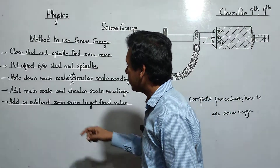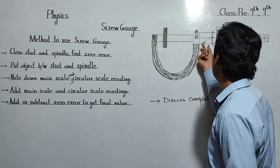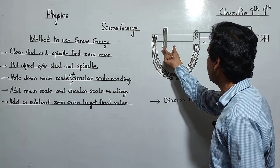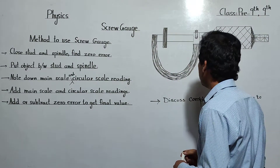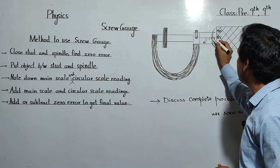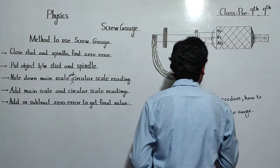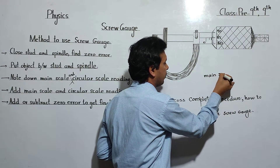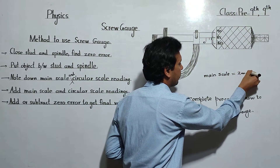Next, read the main scale and circular scale. We look at the main scale — we see which divisions appear when we close the stud and spindle around the object. The main scale reading in our example is 2 mm.